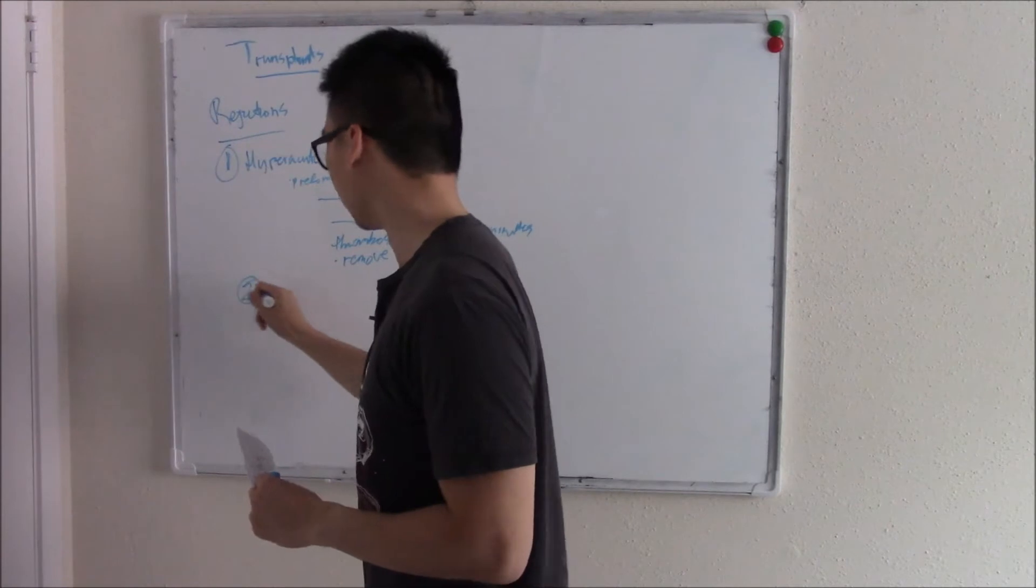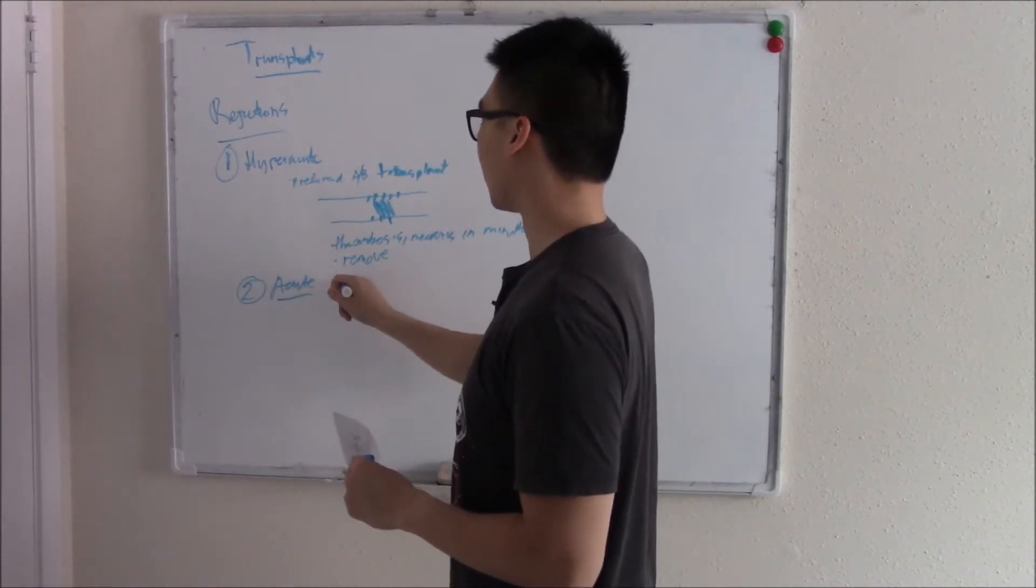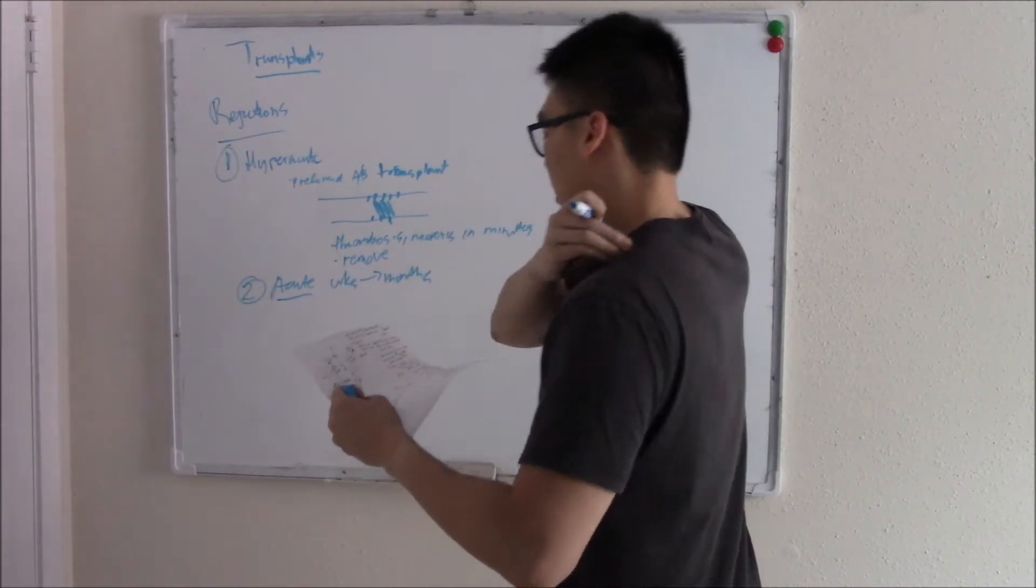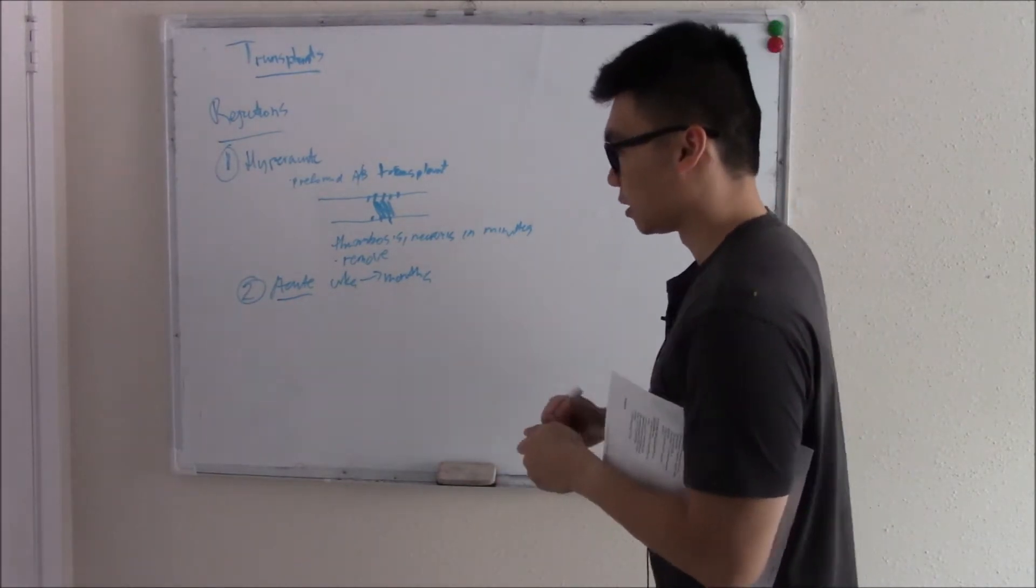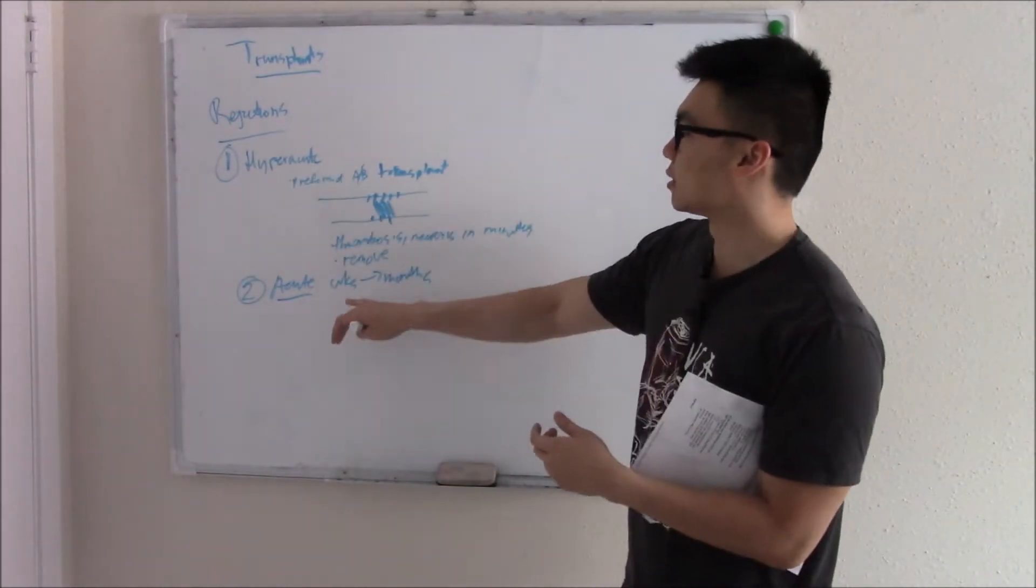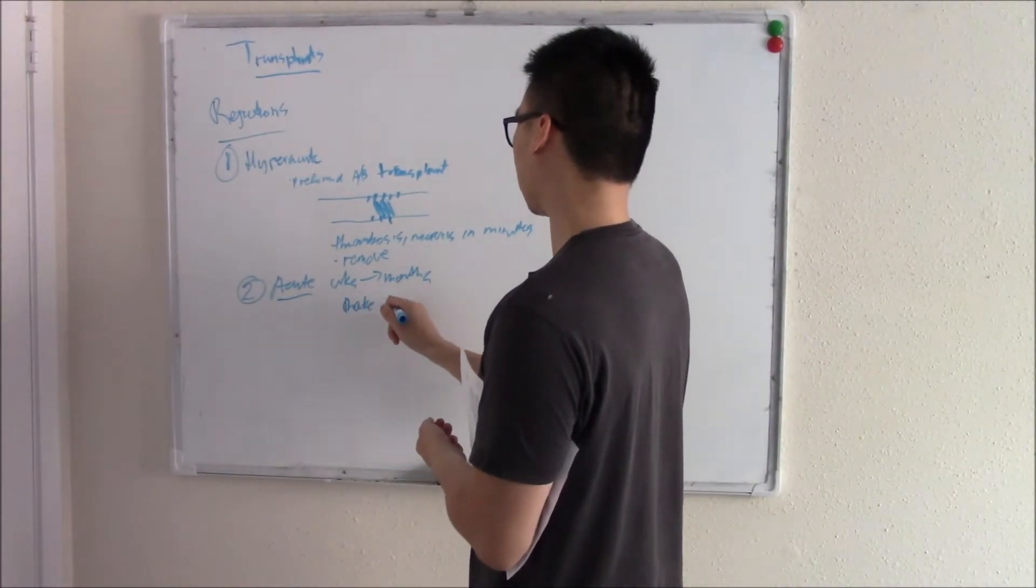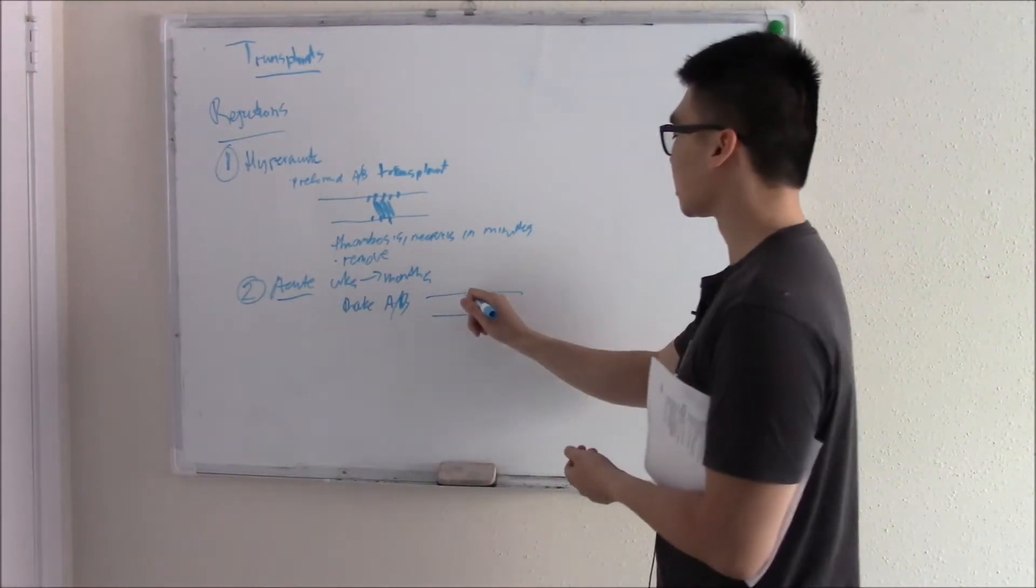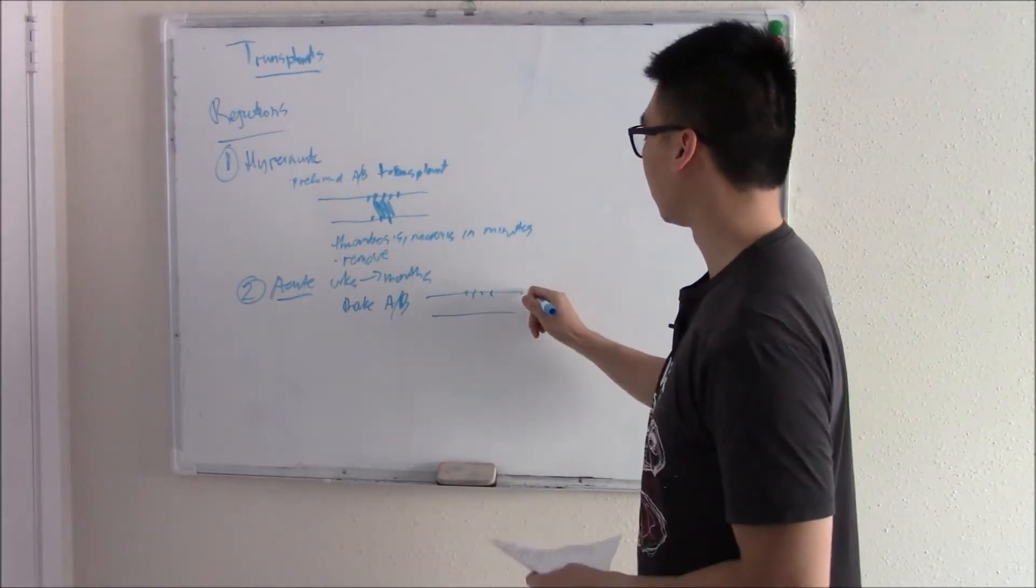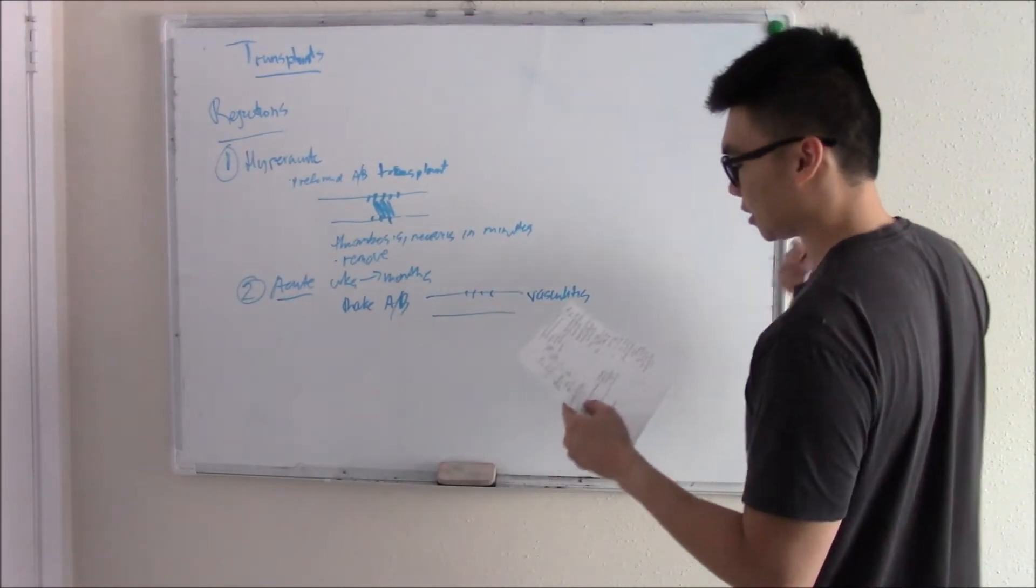Now you have acute rejection, which is not in minutes. That's like super acute. Acute is within weeks to months. This is not preformed antibodies. This is your B cells making antibodies, so that takes some time. It's not within minutes, it's weeks to months. So you make your antibodies, and it will attack your vessels. But this is a little bit less severe, less strong. So you get vasculitis instead.